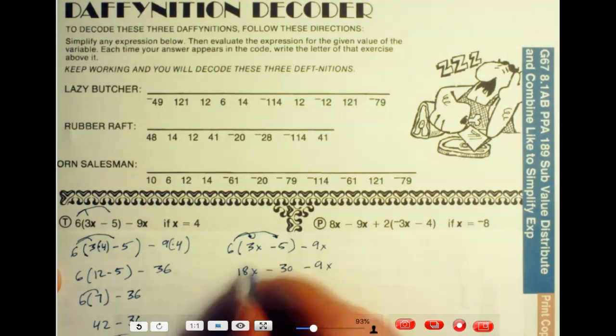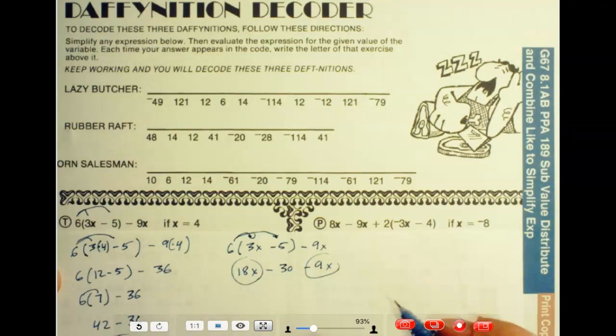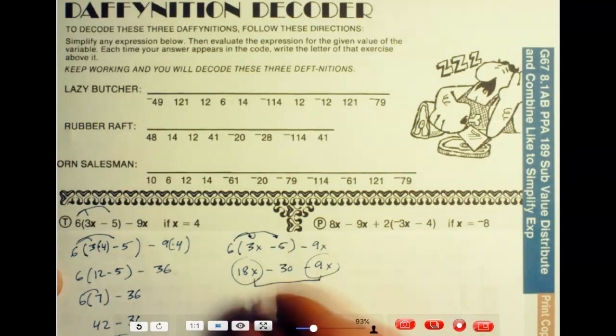Now we've got these x's right here. So we can, these are like terms, and so the difference, they're different signs. The difference is 9x minus 30.